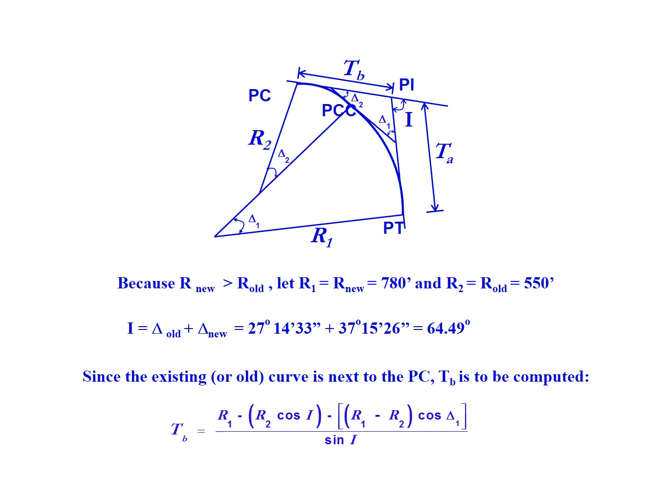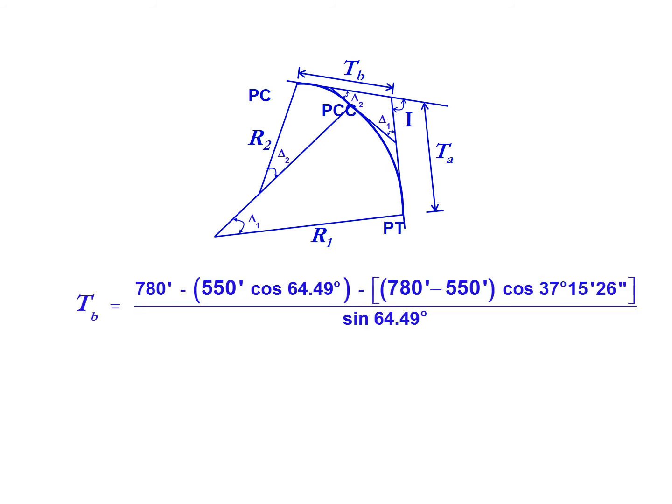The tangent length that is important for this problem is T sub B. That's going to be the tangent length between the PI and the PC, and again for the case where the first curve is the smaller of the curves. So we're going to need to solve for T sub B.